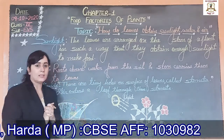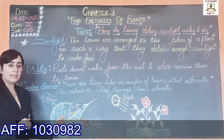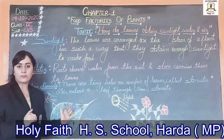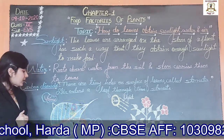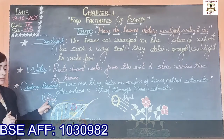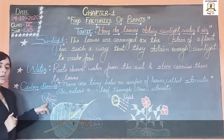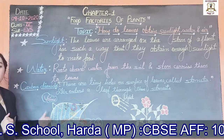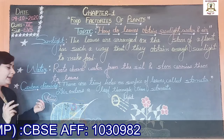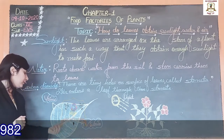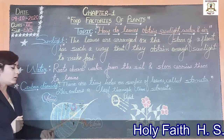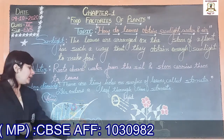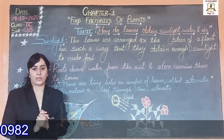If you look closely at a leaf, you will see fine lines like a structure on the entire leaf. These narrow tubes are called veins. And there is a thick main vein in the center called the mid-rib.